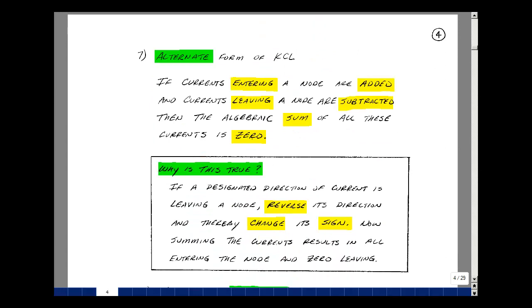Now there's actually another way of doing Kirchhoff's current law. I should also mention that in German, Kirchhoff is pronounced Kirchhoff, and you might hear it pronounced either way. The anglicized version of it is Kirchhoff. Here's an alternative form of Kirchhoff's current law. If the currents entering a node are added and the currents leaving a node are subtracted, then the algebraic sum of all these currents is zero.